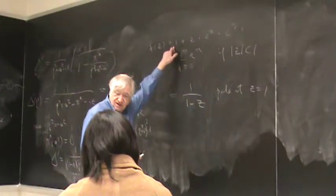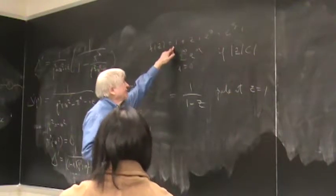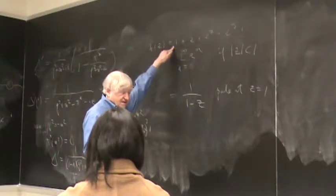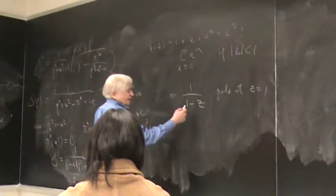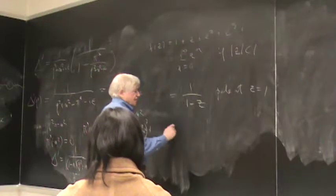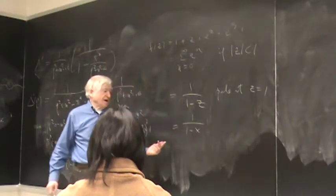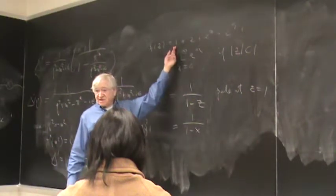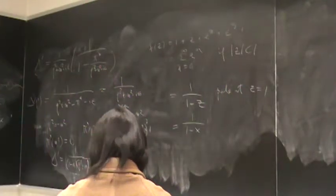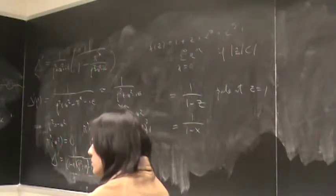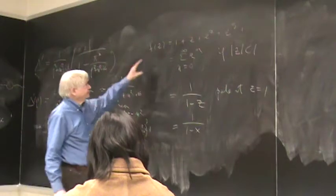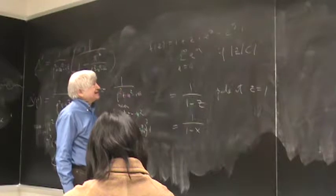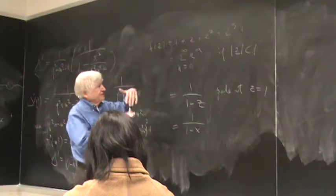The original power series gets worse as the real part of z increases — it simply diverges. But the analytic continuation 1 over (1 minus x) gives, for example, minus 1 at x equals 2, whereas the original series diverges badly there. With analytic continuation you get a unique, sensible expression for the extended analytic function, but it's not the same as extrapolating the original series. That's the curious business going on.